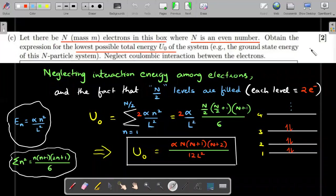The C part is slightly lengthier and you could see there are two points. So let there be N electrons, each of them mass m where N is an even number. Obtain the expression for the lowest possible total energy U_0 of the system, which is the ground state energy of this N particle system. Neglect coulombic interaction between electrons. And the fact - electrons fill up in the energy levels in pairs. You remember that from your chemistry. So if N is even number and two electrons for each level are there, then only N/2 levels will be filled.